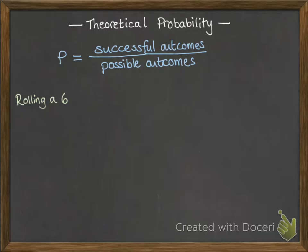For example, rolling a 6. The number of ways that you could be successful when rolling a dice and trying to get a 6 is 1 out of 6. There are 6 possibilities. One of them would be the successful one.